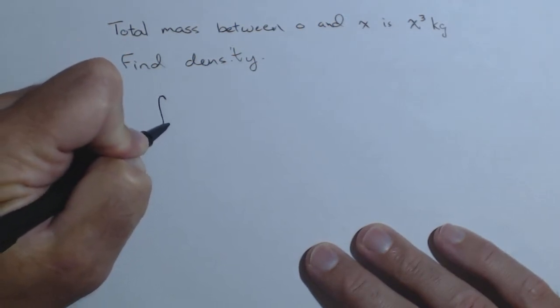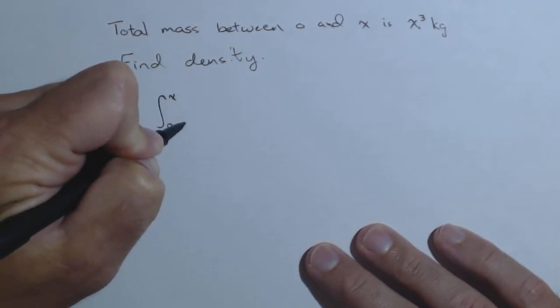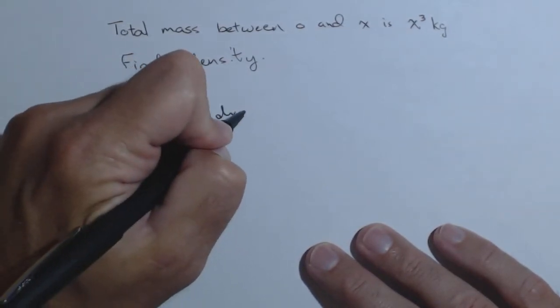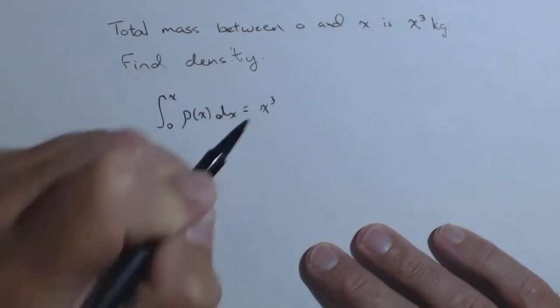What's going on is when we integrate from 0 to x of ρ(x)dx, where ρ depends on x, we're getting x cubed.